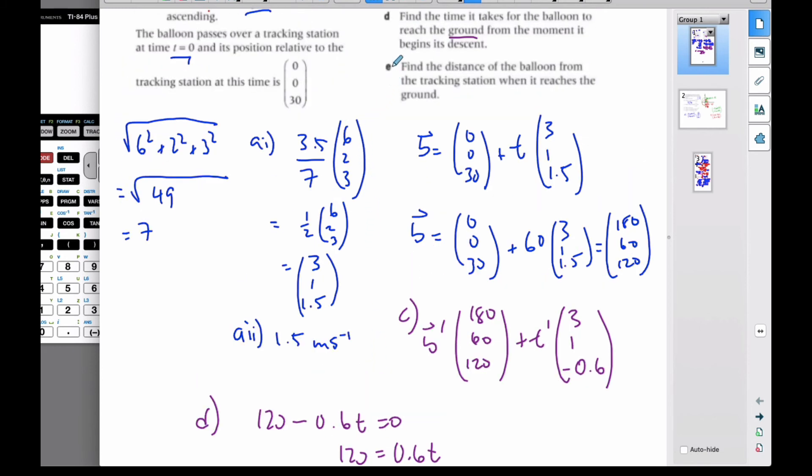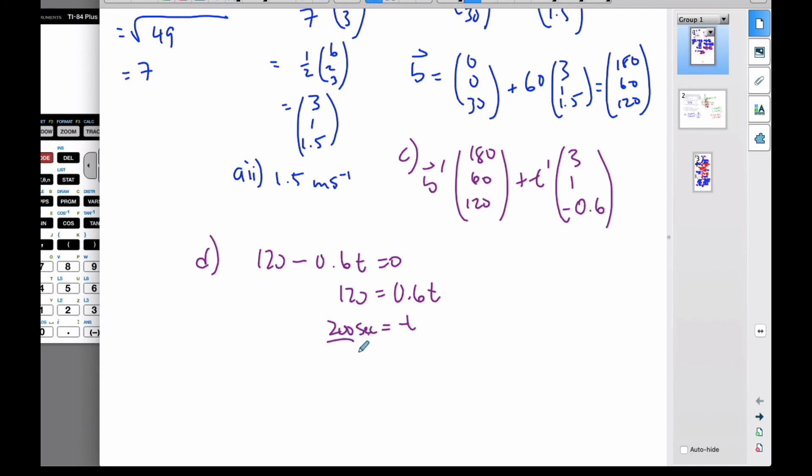Finally, part e asks for the distance the balloon traveled from the tracking station when it reaches the ground. At 200 seconds it's at the ground. If I put 200 in here, I get 180 plus 200 times 3 is 780. Then 60 plus 200 is 260. And the ground is 0. So the position of the landing balloon is (780, 260, 0).